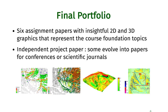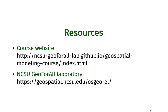At the end of the course, you will have a final portfolio which includes six assignment papers with insightful two-dimensional and three-dimensional graphics representing the course foundation topics. You will also have an independent project paper and a presentation representing your project — and some of these projects have over time evolved into papers for conferences or scientific journals. All information and course material can be found on our course website, developed at the NCSU Geo4All Laboratory.